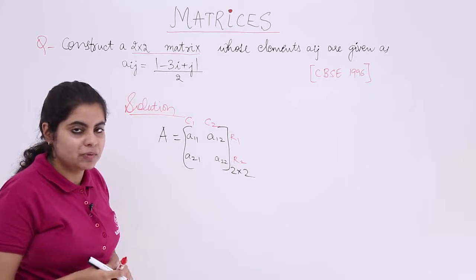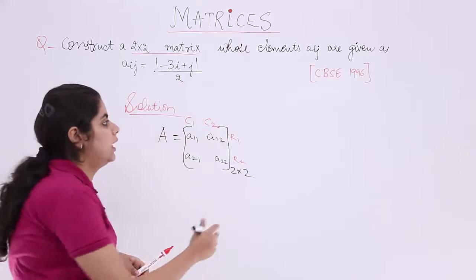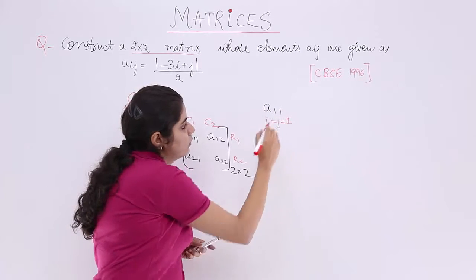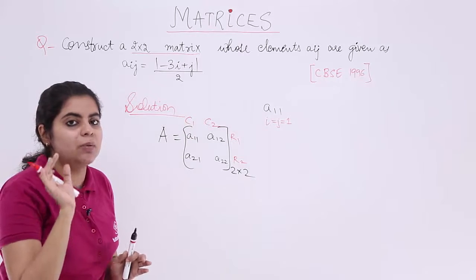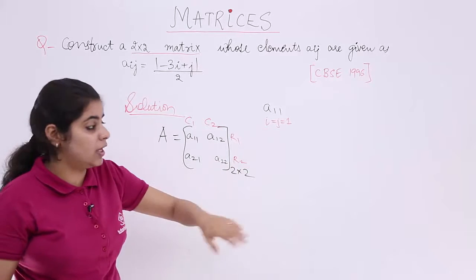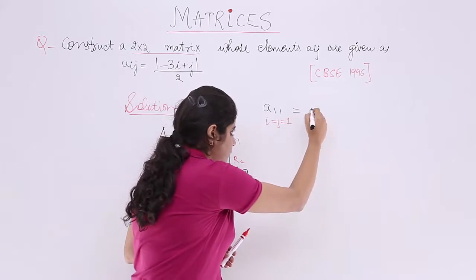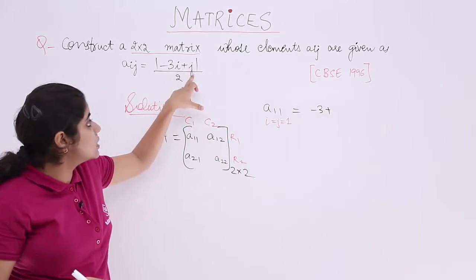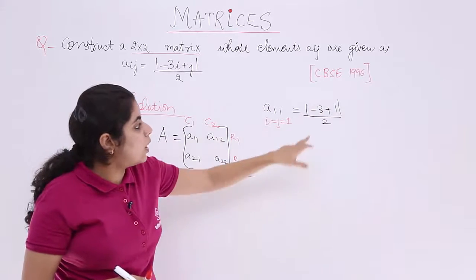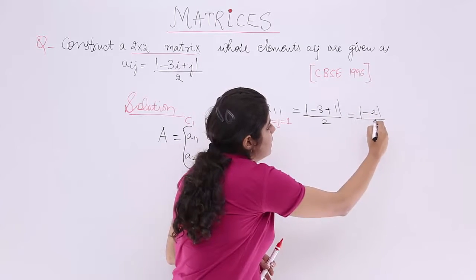Now simple, just put the values. A11 means my i and j are both equal to 1. I need to find out Aij means A11. That means wherever you have i put 1, wherever you have j put 1. Minus 3 into 1 is minus 3, plus j is plus 1, whole mod upon 2. Simply putting the values. Now what is minus 3 plus 1? That is minus 2. So it is minus 2 modulus upon 2.